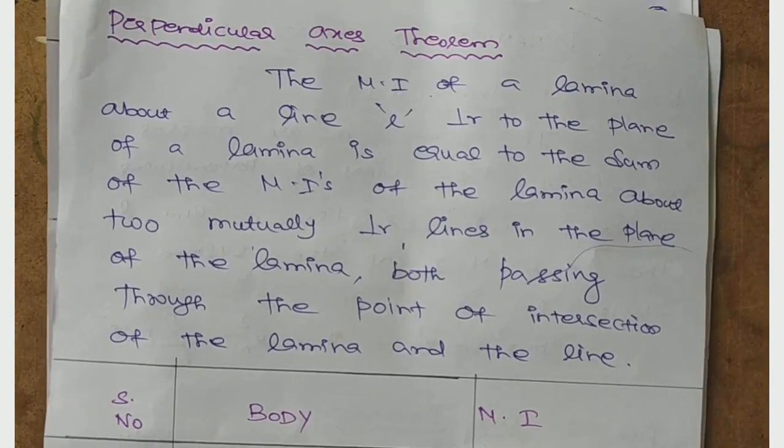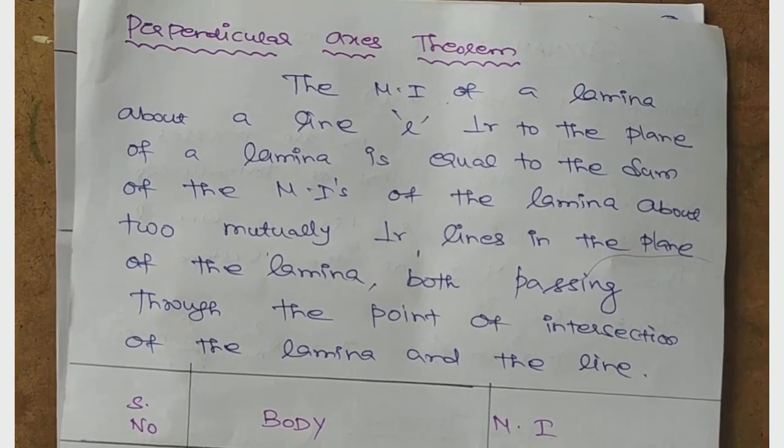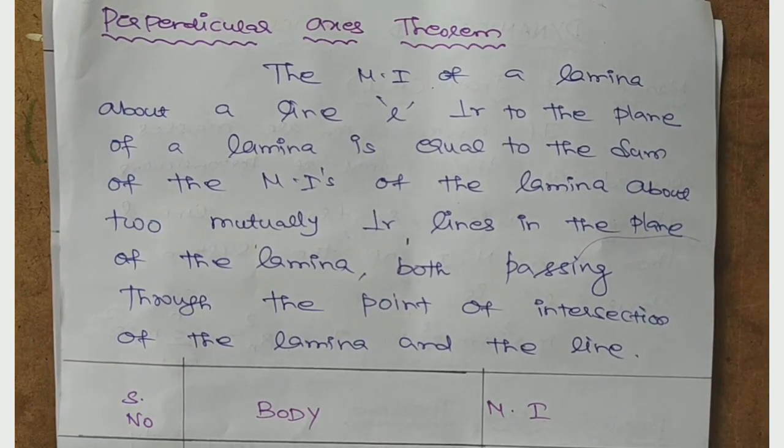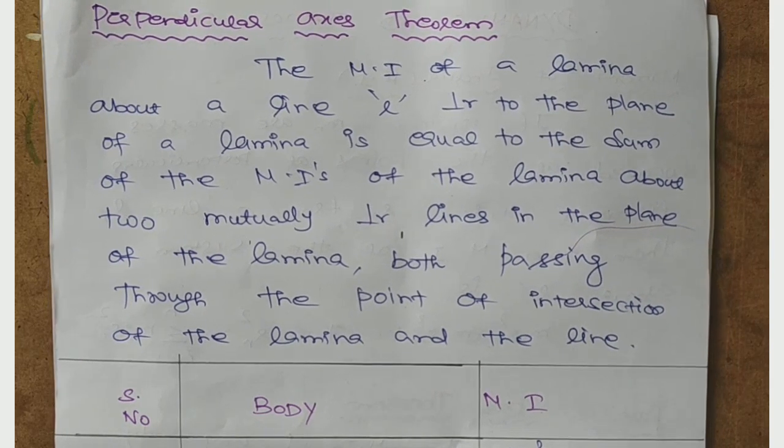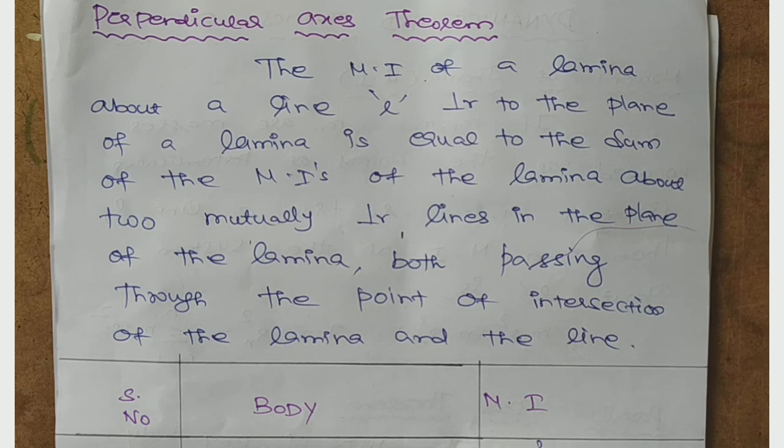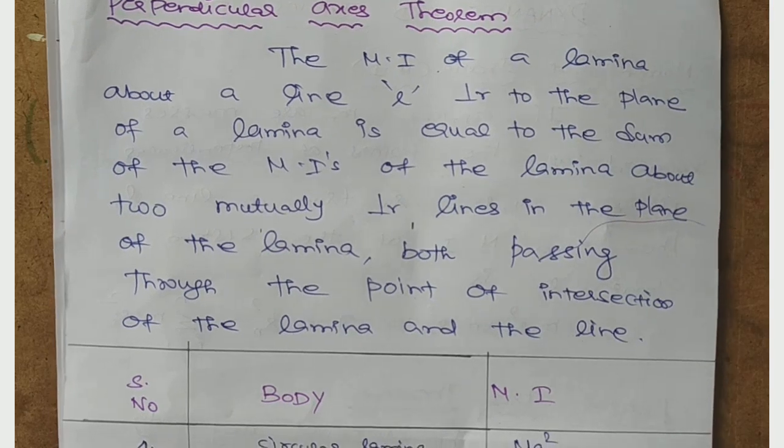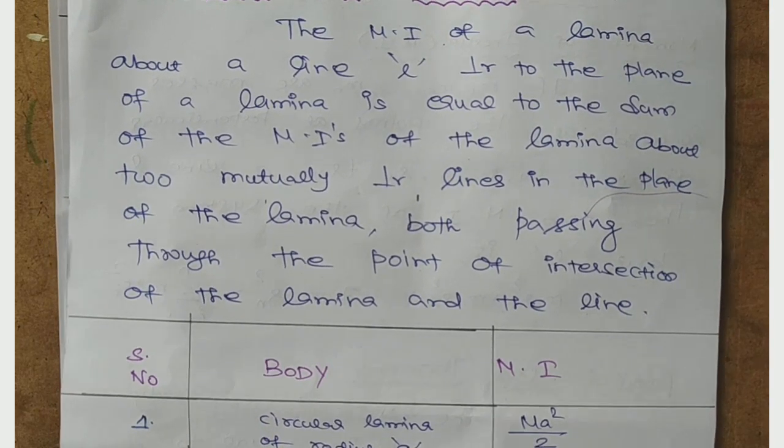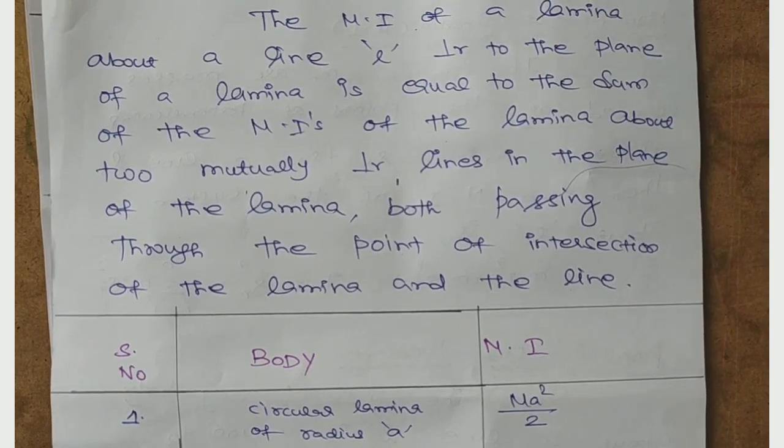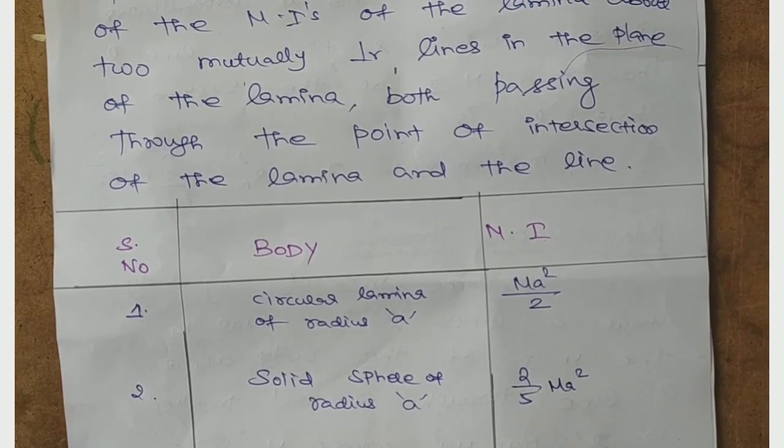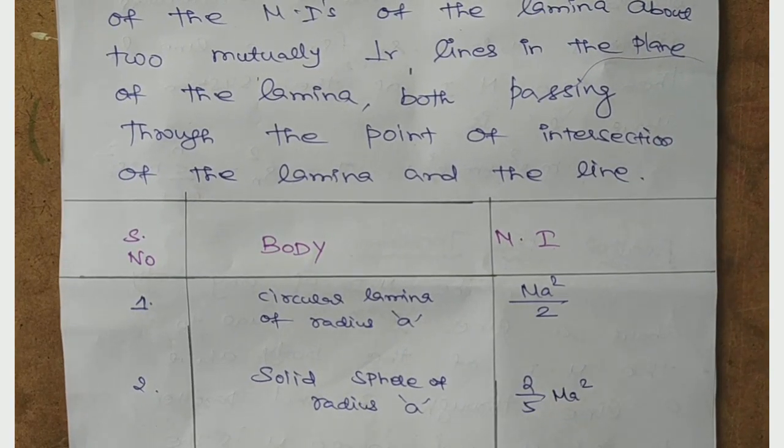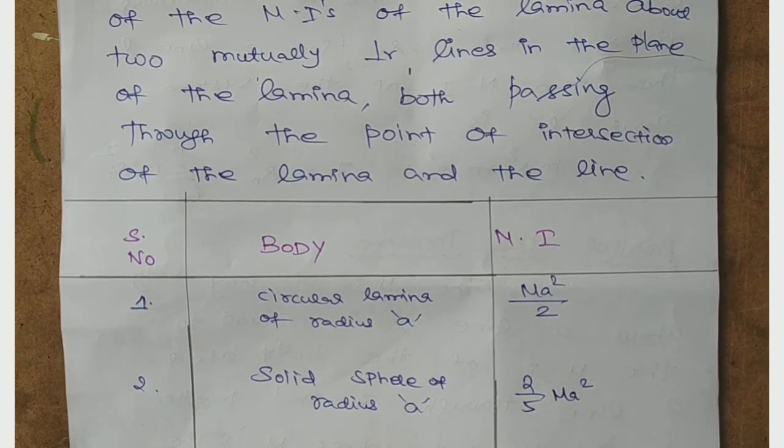Next, perpendicular axis theorem. The moment of inertia of a lamina about a line L perpendicular to the plane of a lamina is equal to the sum of the moment of inertia of the lamina about two mutually perpendicular lines in the plane of the lamina, both passing through the point of intersection of the lamina and the line.